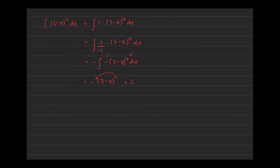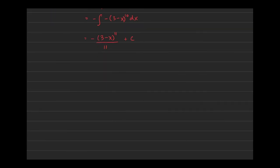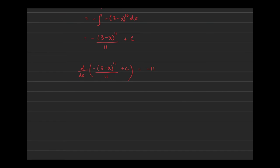So we also compensate by dividing by 11, so that when we bring the 11 down it cancels out. Let's verify: the derivative of -(3 - x)^11 / 11 + C, using chain rule, brings down 11 to give -11(3 - x)^10 / 11, times the derivative of the inside which is -1. The negatives multiply to positive, the 11 over 11 cancels, leaving (3 - x)^10 — exactly our integrand.